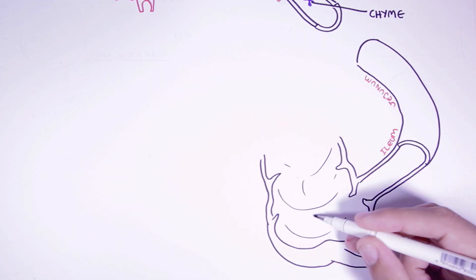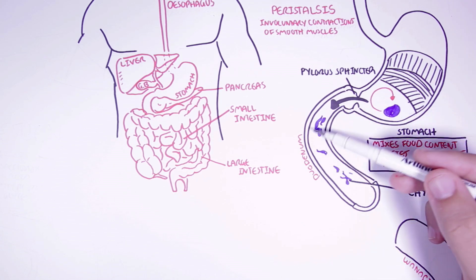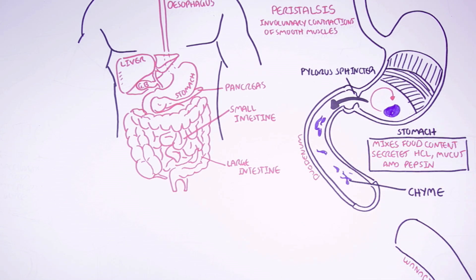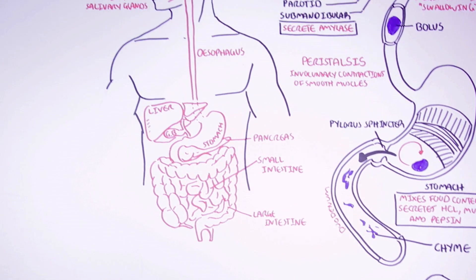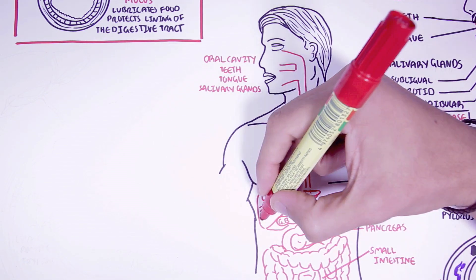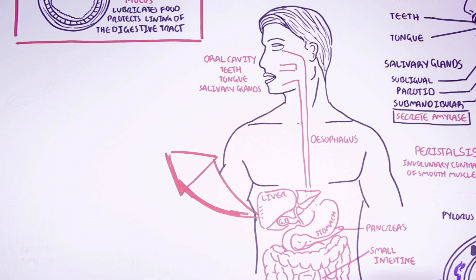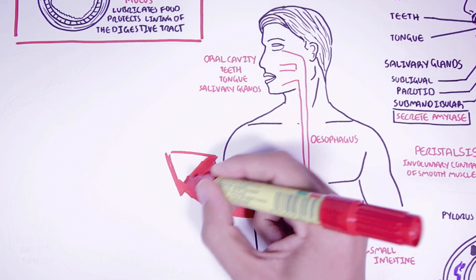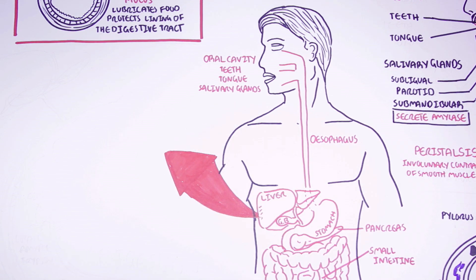The small intestine is very important because it is where most of the digestion and absorption of food takes place. However, it cannot do this without the help of the accessory organs: the liver, the gallbladder, and the pancreas. So let us learn a bit more about these accessory organs and learn about their role in digestion.